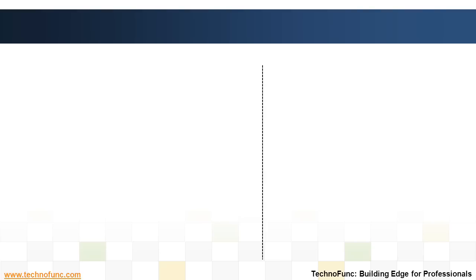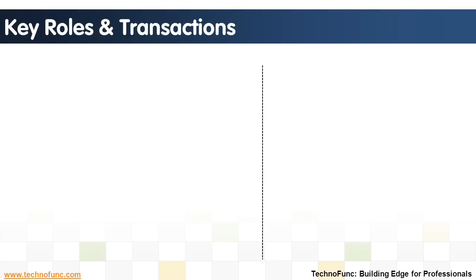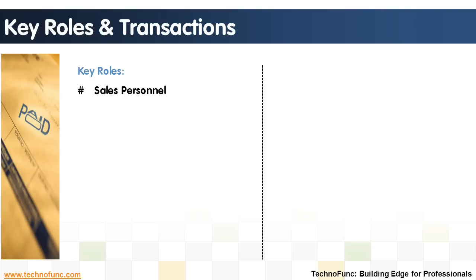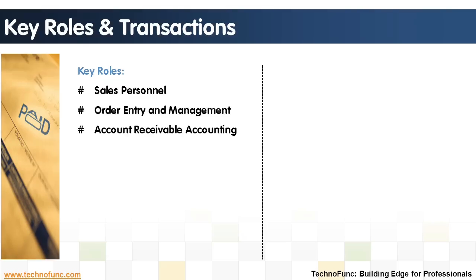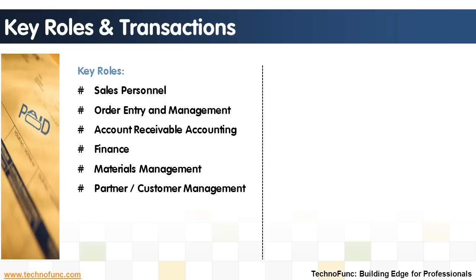Key roles during the OrderToCash process: sales personnel, order entry and management, accounts receivable accounting, finance, materials management, and partner and customer management.